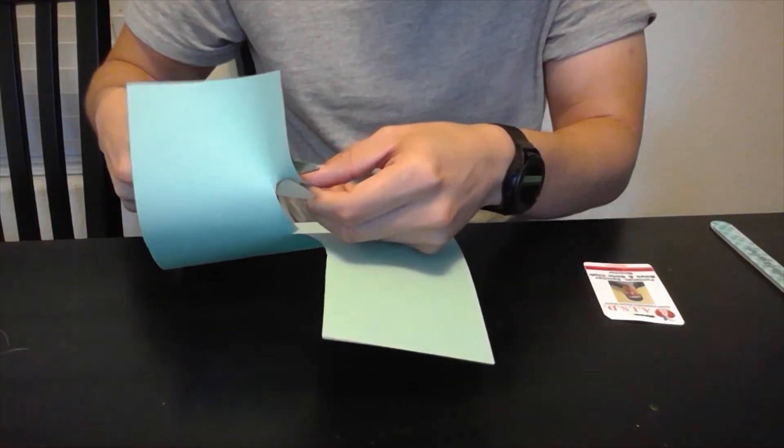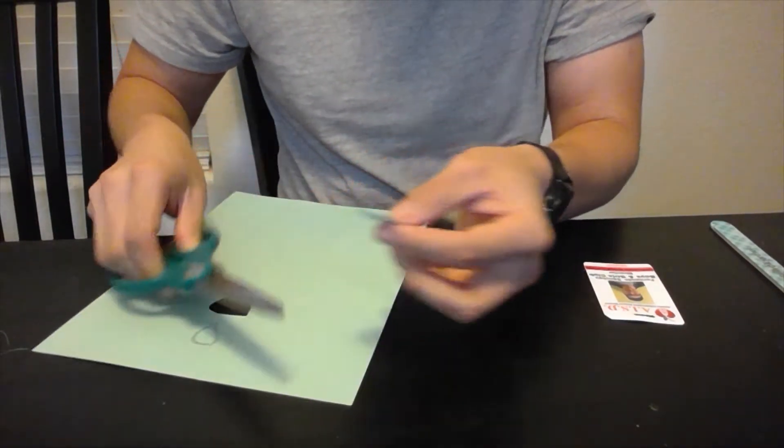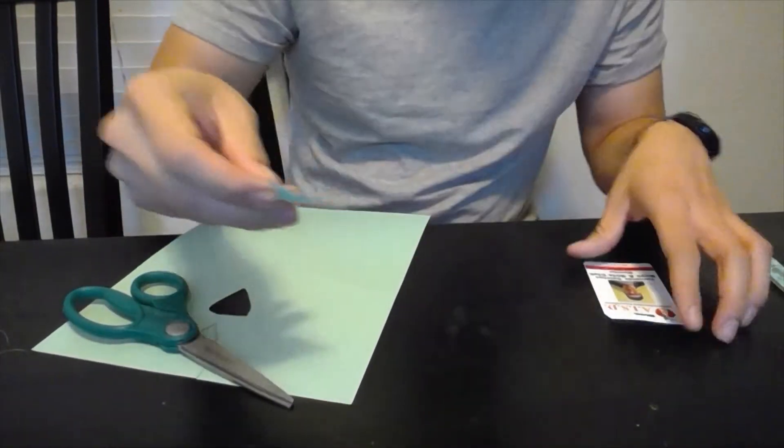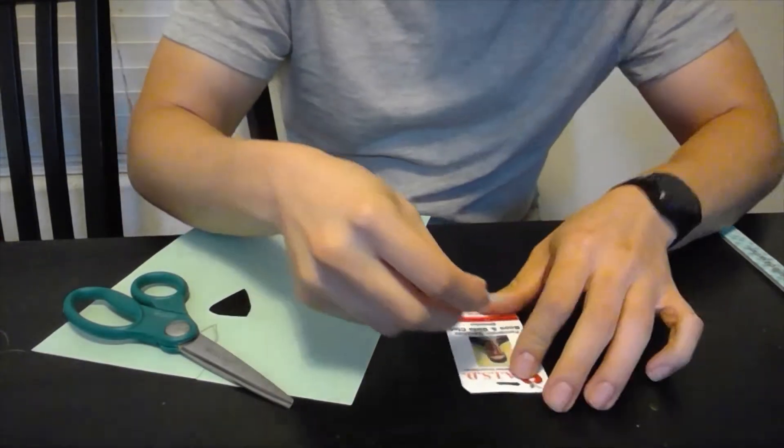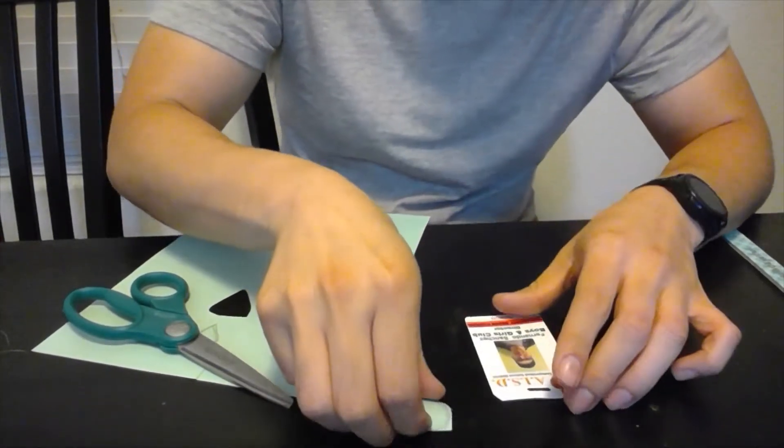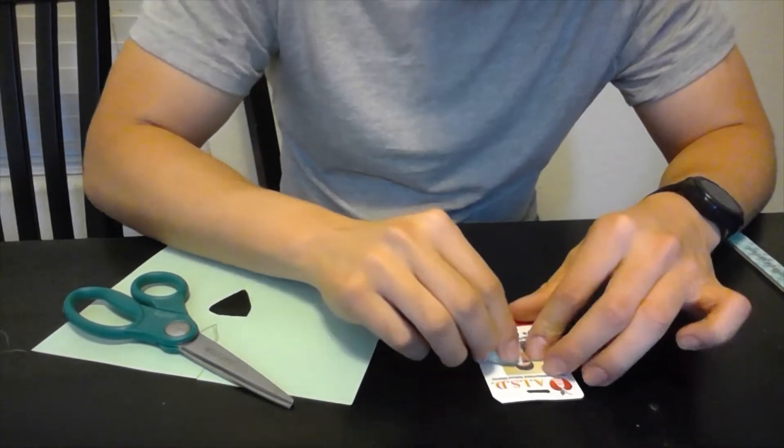After you have your outline, you're just gonna cut it out. That's a good size for me on a piece of paper. Now you're gonna grab your old ID card and put it over wherever you want. I'm gonna have my face as the center of the pick since I'm using my old ID card.